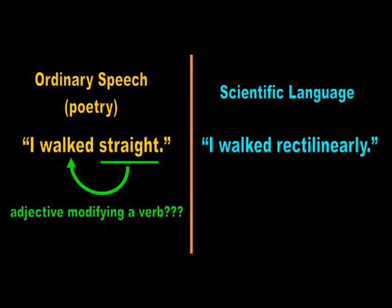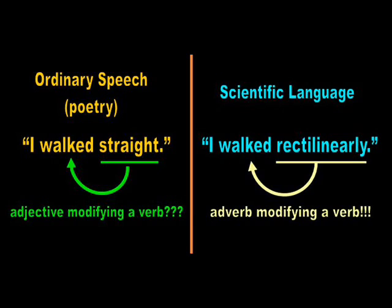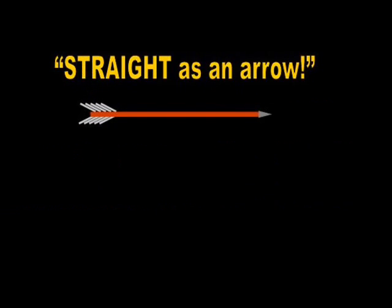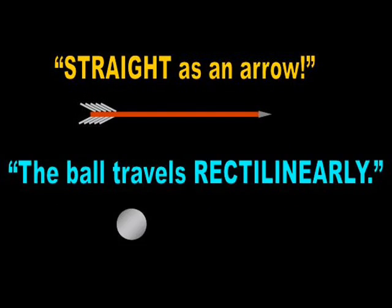The scientific term is rectilinearly. An arrow may be said to be straight. Rectilinearly is the manner in which a ball flies through the air.